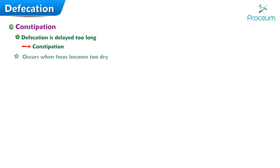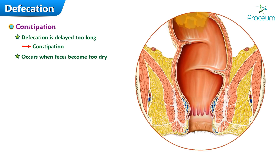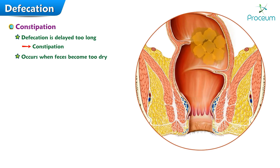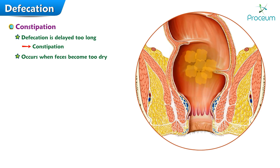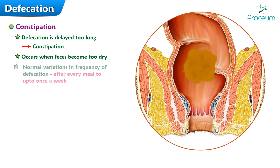Constipation occurs when the feces become too dry. When colonic contents are retained for longer periods of time than normal, more than the usual amount of water is absorbed from the feces, so they become hard and dry. Normal variations in frequency of defecation among individuals range from after every meal to up to once a week.